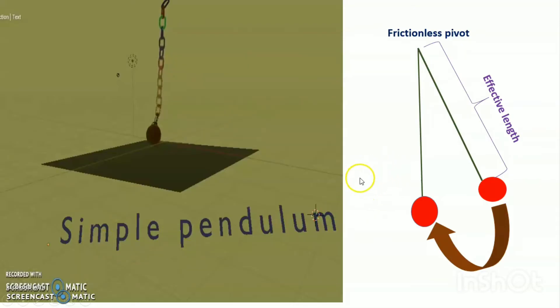Now you see that this is the effective length, the frictionless pivot. This is the total effective length in my 3D model. This is the path and this point is the equilibrium position.